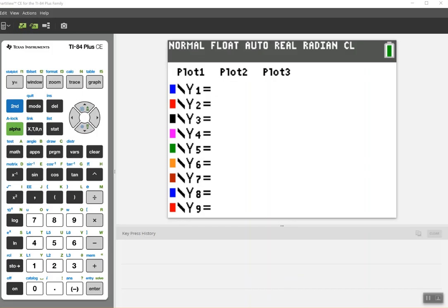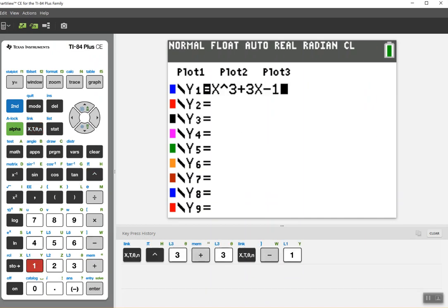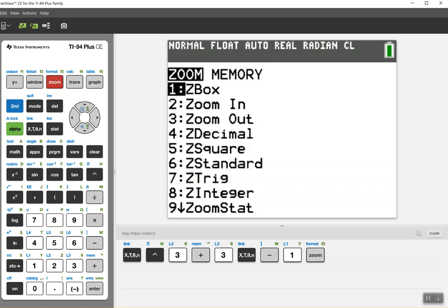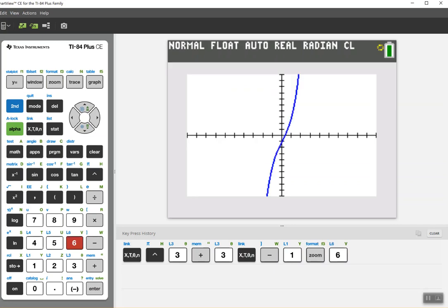So we're going to start by plugging in x to the power of 3 plus 3x minus 1 into the y1. I'm going to click zoom 6 to turn everything into a standard window setting. And I'm going to look at the interval going from negative 1 to 2.